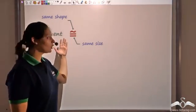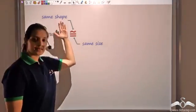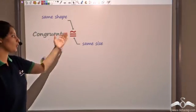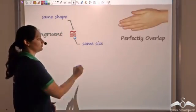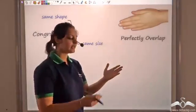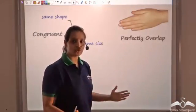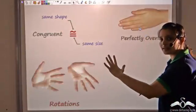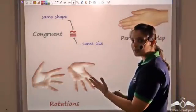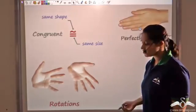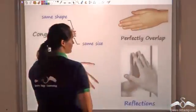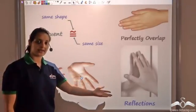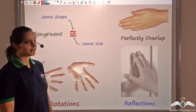We know that congruent means same shape and size, and this is the symbol we use to show congruent. We had also seen that if objects perfectly overlap they are congruent. Different rotations of my hand are also congruent because the shape and size is not changing. Similarly, mirror reflections are also congruent — they neither change the shape nor the size of an object, and hence we can say that they are congruent.